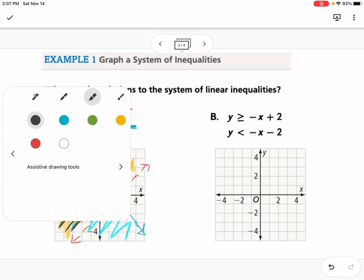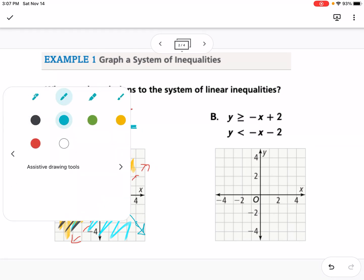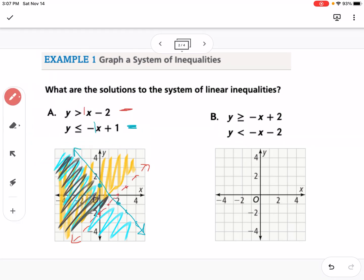Let's go back to the pen. Let's use red again for this top one. I am going to go to positive 2. My slope is negative 1, so I'm going to go down 1 over 1. This one is or equal to, so I'm going to connect it with a solid line. And it's greater than, so I'm going to shade up here.